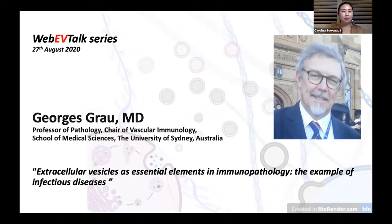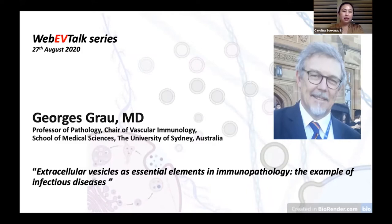Today it's my pleasure to introduce George Grau, a professor of pathology at the University of Sydney, Australia. George has been working in the field of extracellular vesicles since 1998. His particular interest is the role of EVs in immunopathology, focusing on EVs as vectors of cytokine-mediated lesions of microvascular endothelium in inflammations, notably immune complications of infections, autoimmune diseases, and cancer. He is also currently president of the Australia and New Zealand Microcirculation Society. Today his talk is about extracellular vesicles as essential elements in immunopathology — the example of infectious disease.